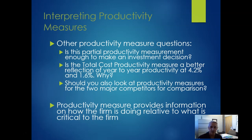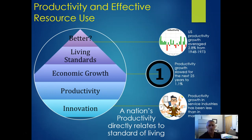The productivity measure provides information on how we're doing relative to what's critical. In the bank example, if it's critical to process more loans per person, that's the measure to track. If you're trying to produce more widgets per employee on a manufacturing line, that's the relevant productivity measure. Anytime we're talking about productivity, we're really trying to measure effective resource use — are we doing things better or not?